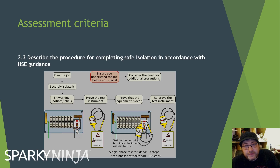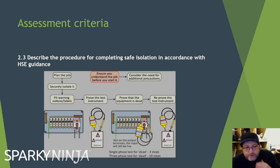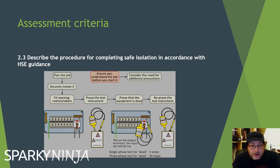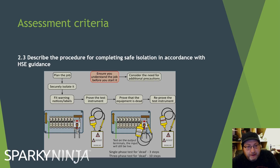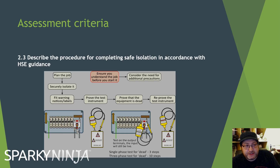2.3: Describe the procedure for completing safe isolation in accordance with the guidance. It doesn't say just know how to do it — you need to be able to word it. You need to understand the procedure and be able to write it down, which you should be able to do for a RAMS or risk assessment anyway. Don't just say 'I do safe isolation procedures' — you should state a process and make sure it's working.